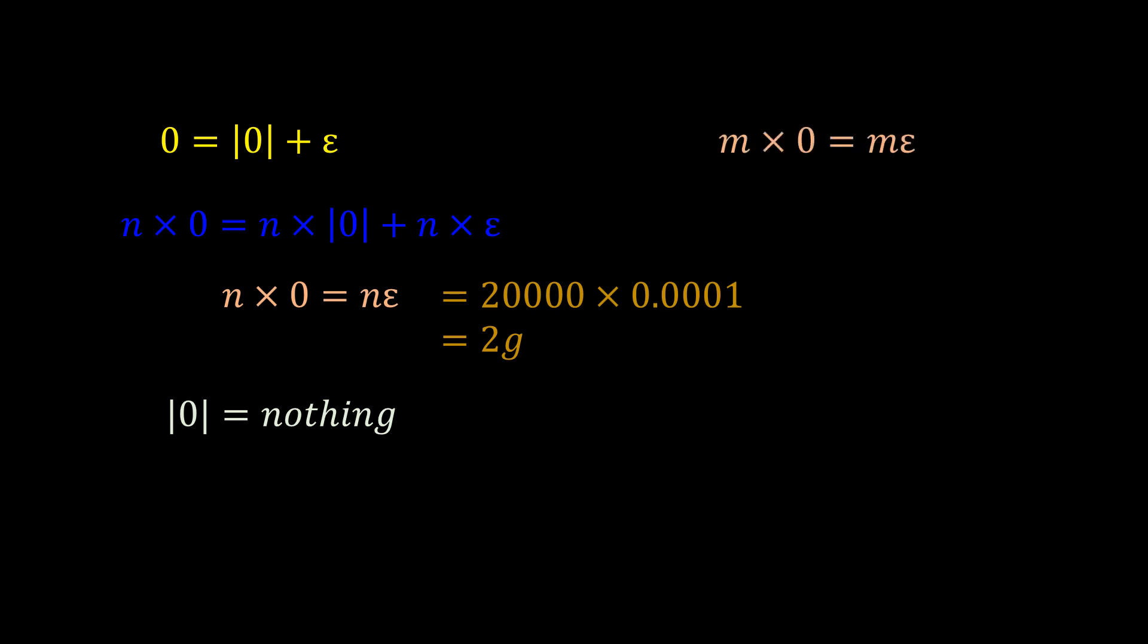We could have solved this problem using the formula 0 equal to the magnitude of 0 plus epsilon, such that n times 0 is equal to n times the magnitude of 0 plus n times epsilon. And this equals n times epsilon. Since by the definition of absolute 0, n times absolute 0 is 0. Therefore, m times 0 is equal to m times epsilon. So, as long as n is different from m, then m times 0 is always different from n times 0. So, 0 is not an absorbing factor as you were taught.